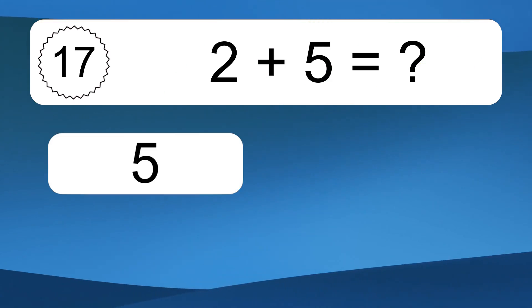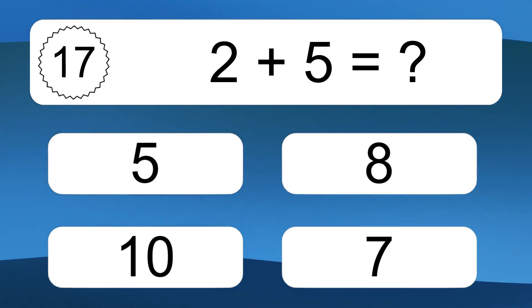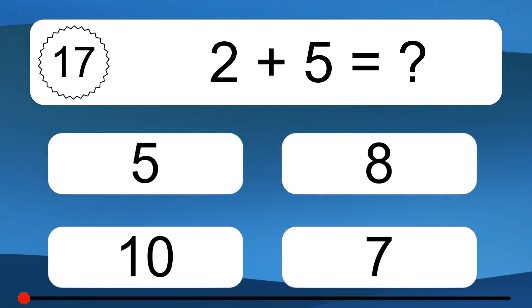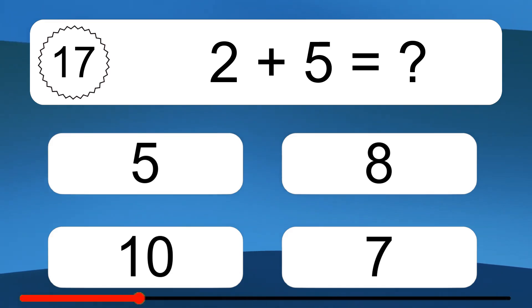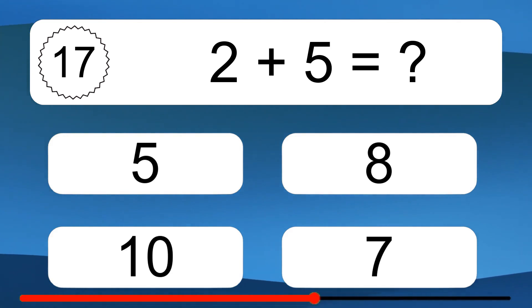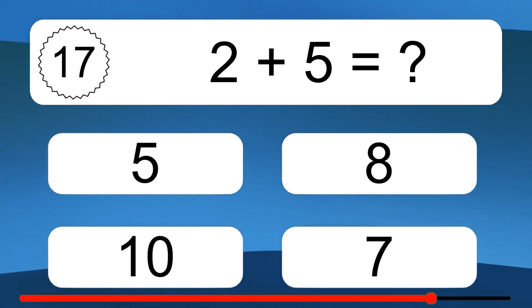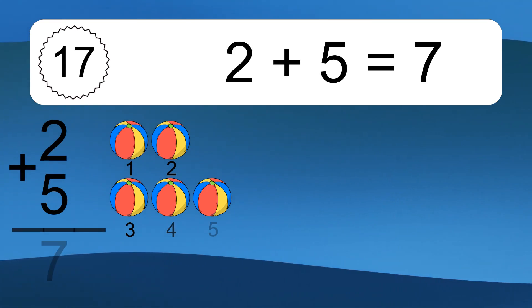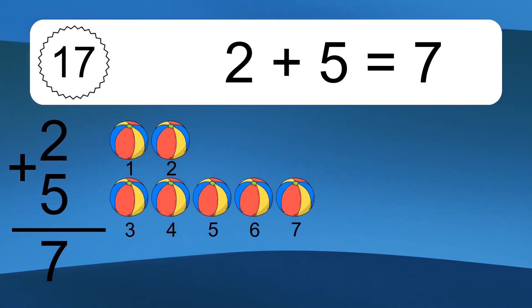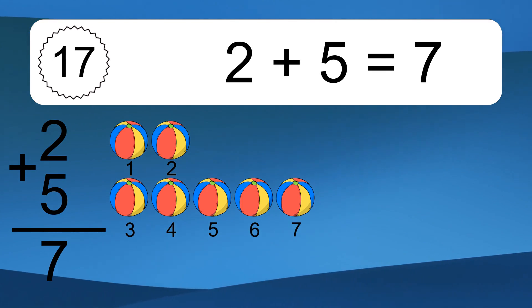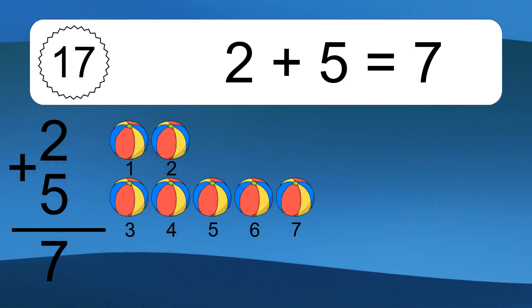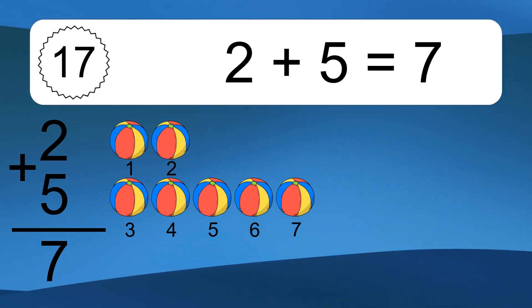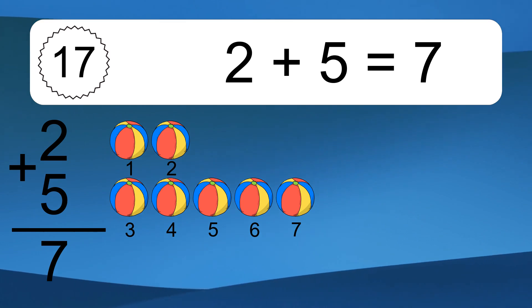2 plus 5 equals what? 2 plus 5 equals 7. Let's count it. 1, 2, 3, 4, 5, 6, 7.